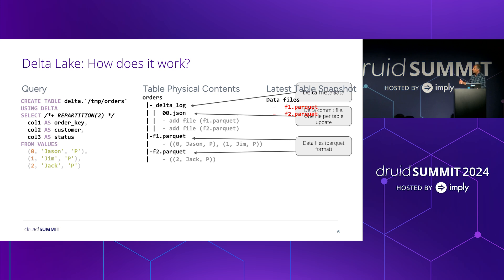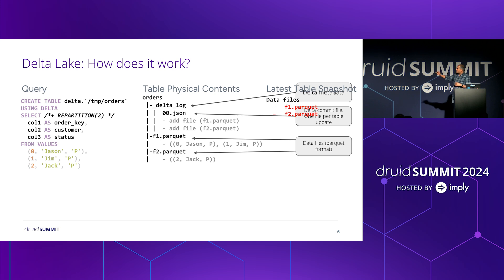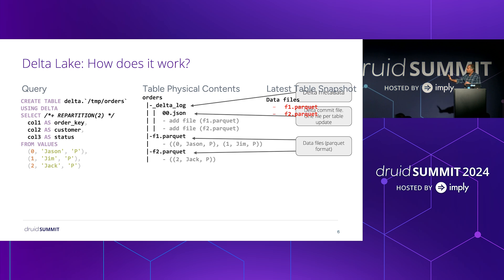Now let's go to a more complicated case where you are actually deleting data. The query is a delete query — you want to delete all records satisfying the predicate order key equal to zero. Your existing table layout is shown, and once the query completes, at the bottom of the slide you see f1 slash updated. This is basically the rewritten file of the existing data file that has the rows matching the predicate. The f1.parquet has the record matching the predicate; that file is read and rewritten excluding the records that satisfy the delete predicate.